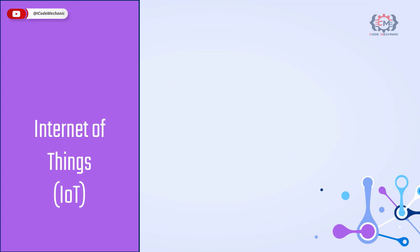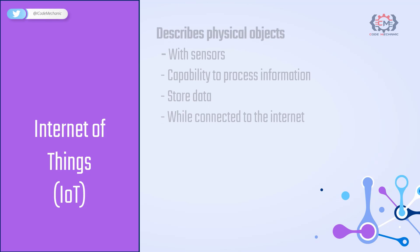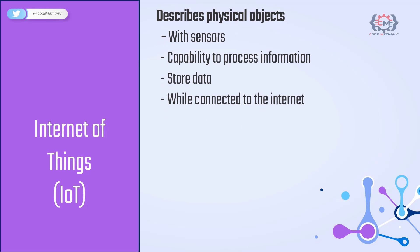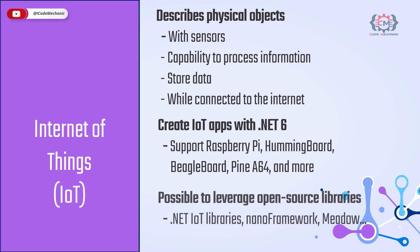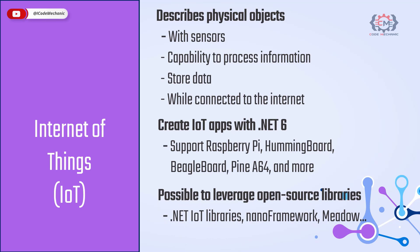Internet of Things or IoT describes physical objects with sensors that have the capability to process information and store data while connected to the internet. In .NET 6, you can create IoT apps using C# that run with native support on Raspberry Pi, Hummingboard, BeagleBoard, PINE A64 and more. You can leverage open source libraries and frameworks to interact with specialized hardware such as sensors, analog-to-digital converters and LCD devices. Specialized libraries include the .NET IoT libraries, .NET Nano Framework, Meadow and more.